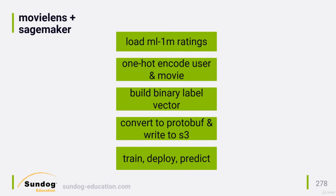Let's say we have 500 users and 1,000 movies in our data set. The idea is to encode ratings as 1,500 binary values, where the first 500 values represent each user and the next 1,000 values represent each movie. We'd only set two values in those 1,500 to one — one for the user and one for the movie that was rated; the rest are all set to zero. All those zeros are a huge waste of space, so we use a sparse tensor to store each one-hot encoded rating in a much more compact format.